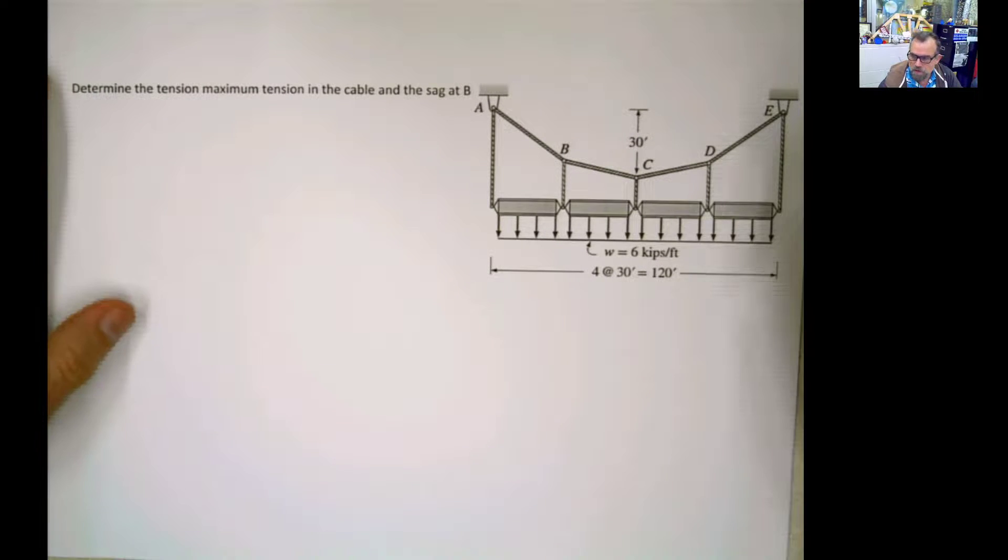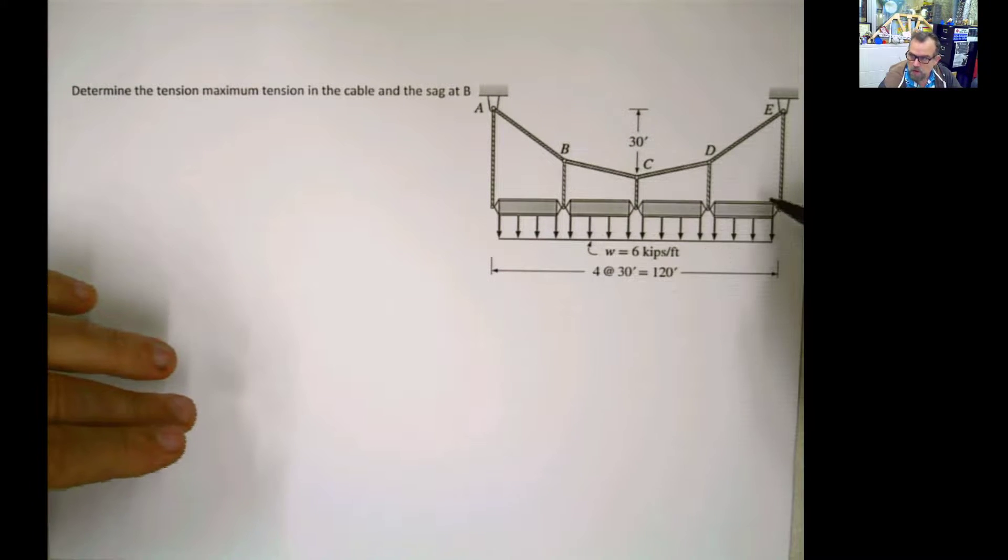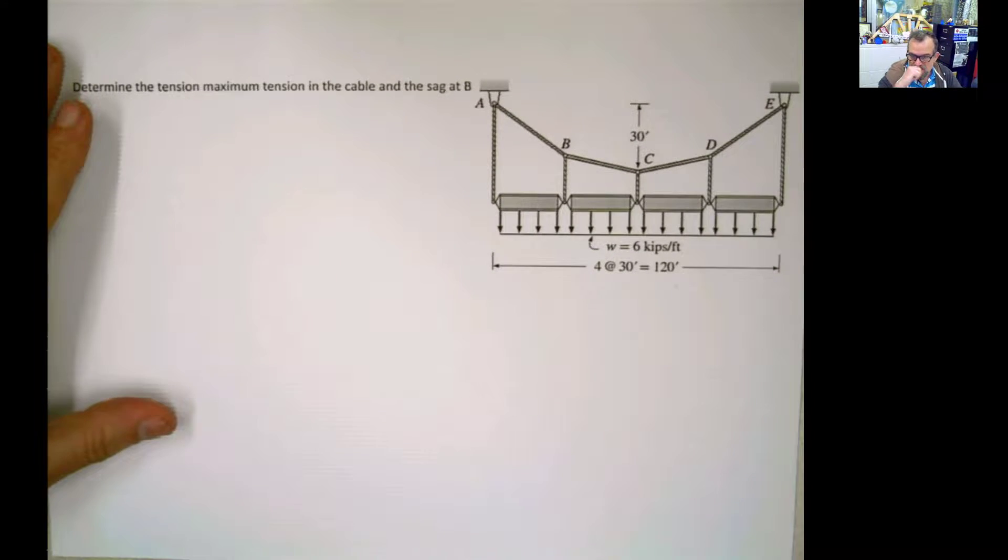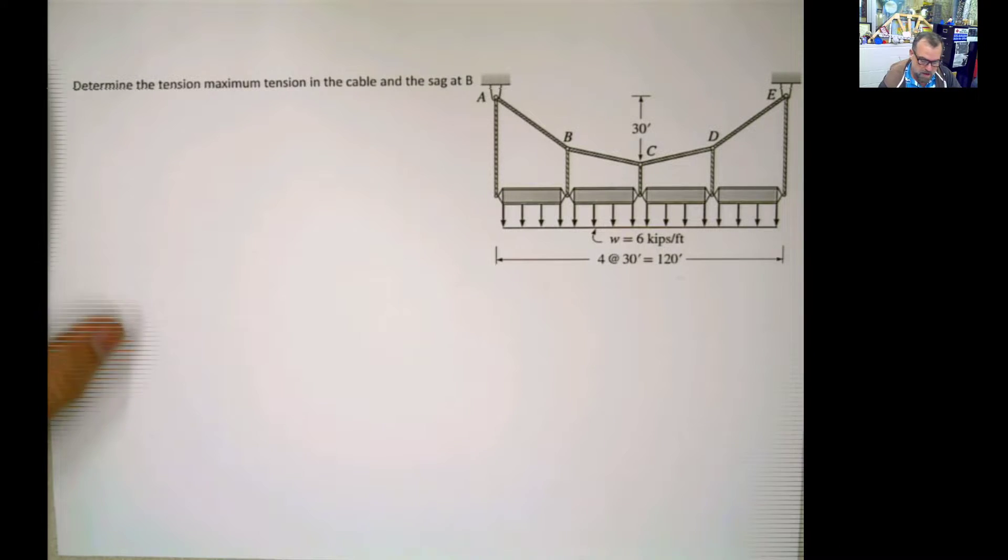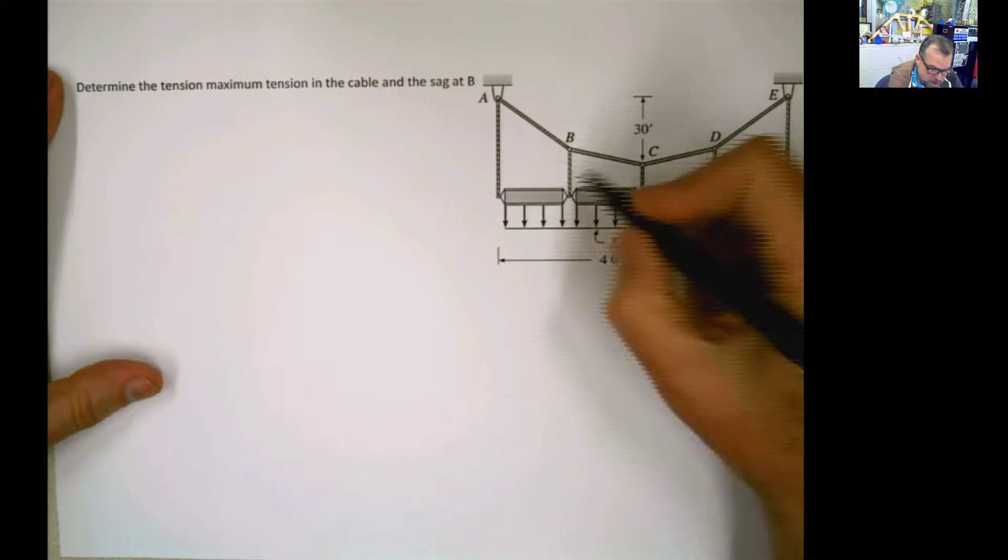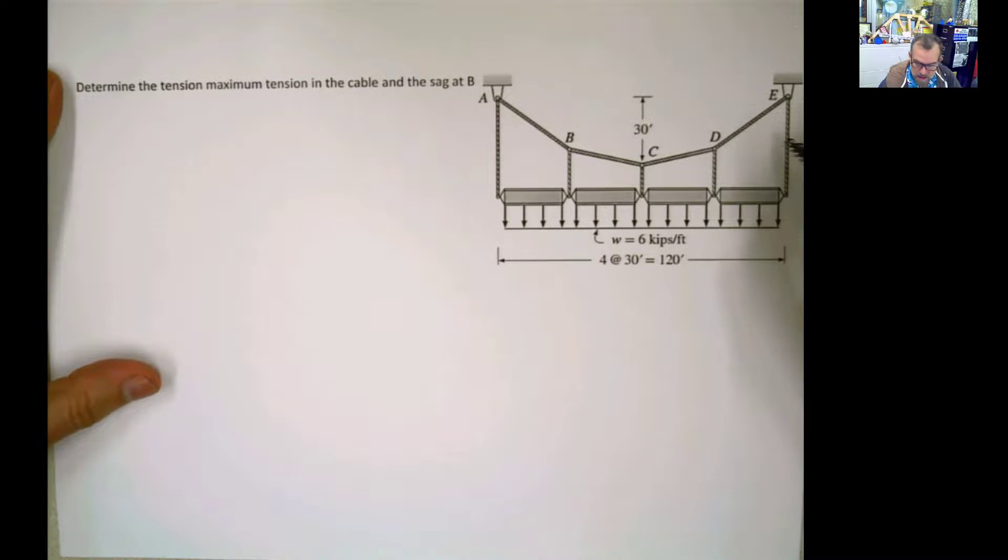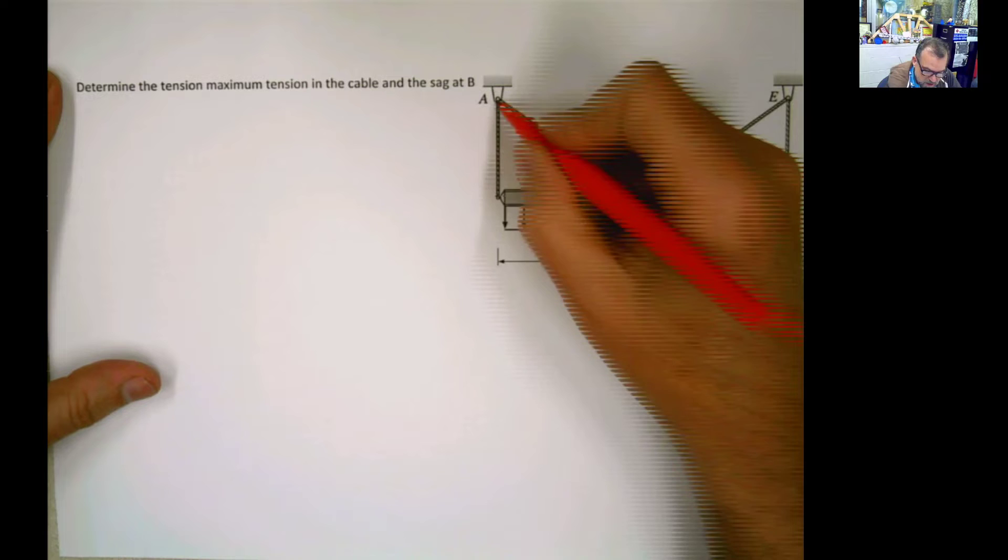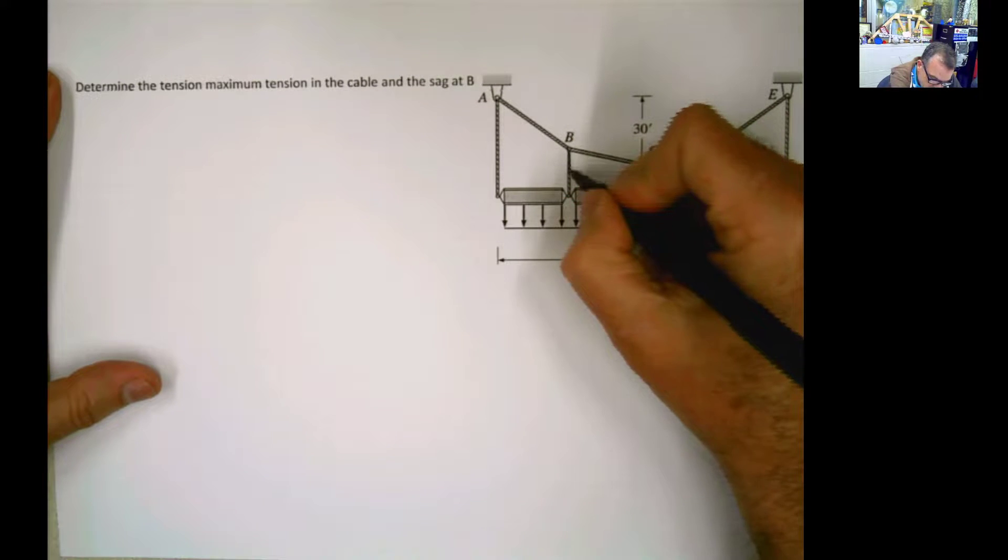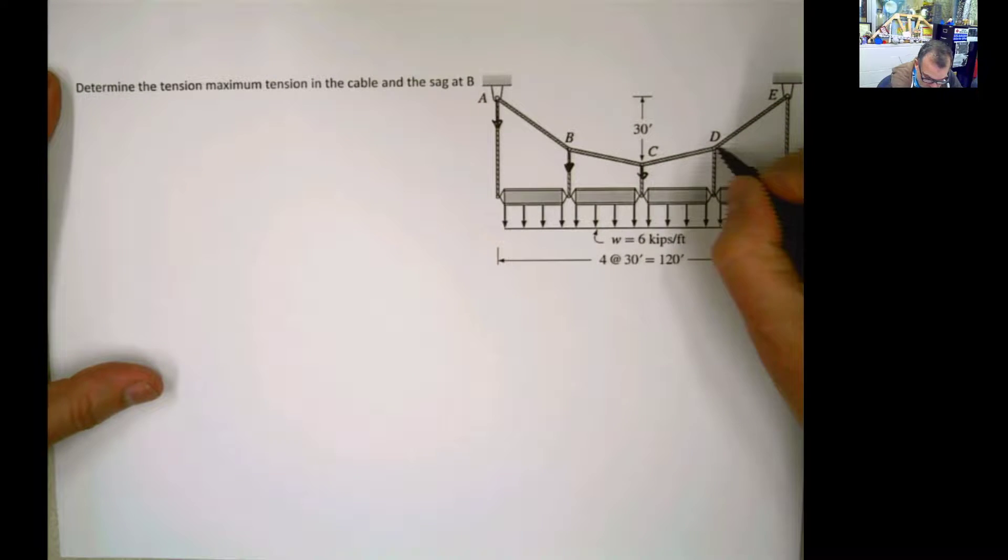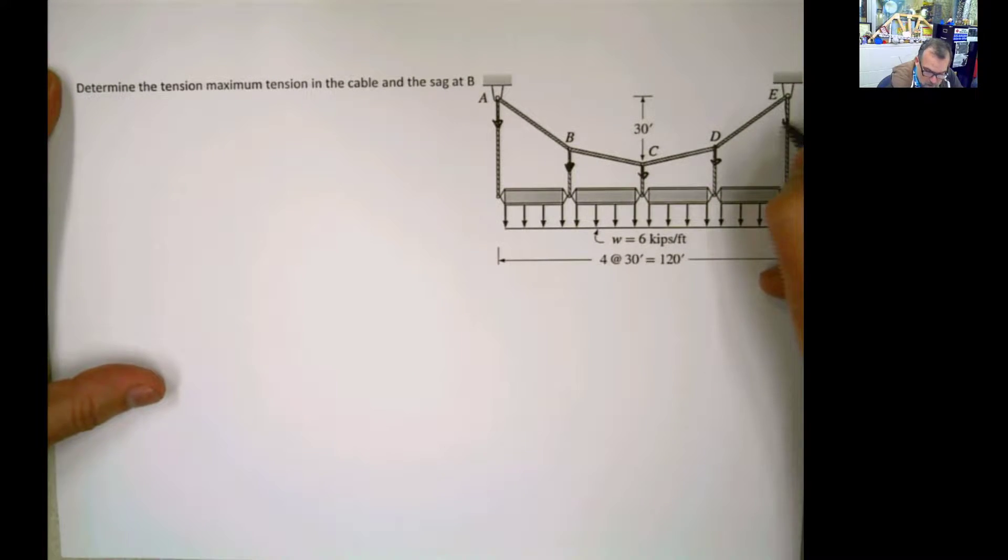You cannot apply the formulas that we derive for distributed loading in cables because you can see the shape of the cable. The shape of the cable is a funicular shape. If you have that funicular shape, meaning straight lines, then each one of these are concentrated loads. And that's the way we have to treat this problem. Now, how do I know how much weight is hanging from, let's say, here or from here, or in any one of them?